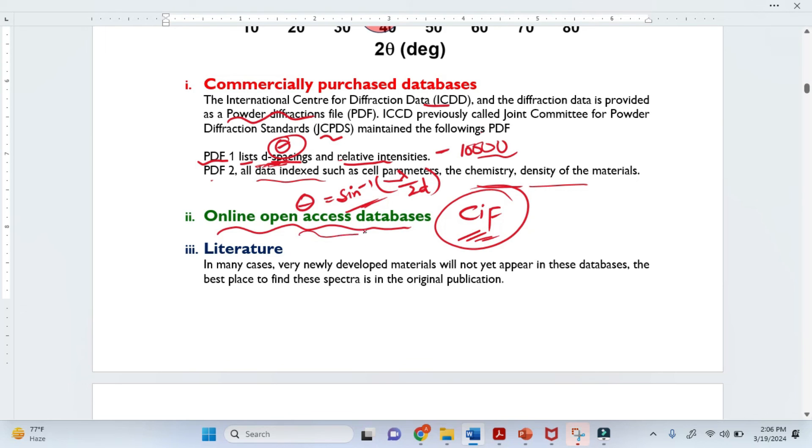The second one is online open access databases. The third one is very important: literature. Because these two databases basically get the data from literature. So why don't you look to the literature? In many cases, very newly developed materials will not yet appear in these databases. So the best place is to find these spectra, XRD patterns, in the original publications.